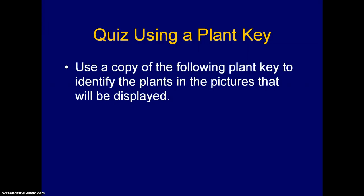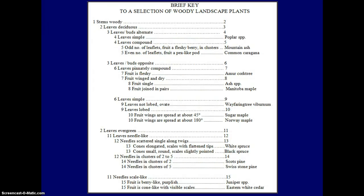In the first video we went through how a key works and how you can actually use a key. In this video we will apply that knowledge — I will provide several photographs of nine different plants and you will be asked to use this particular key, which you will be given either through the Angel site or I can email it to you. You can use this key and follow along and try to key out the particular plants that I will be showing.